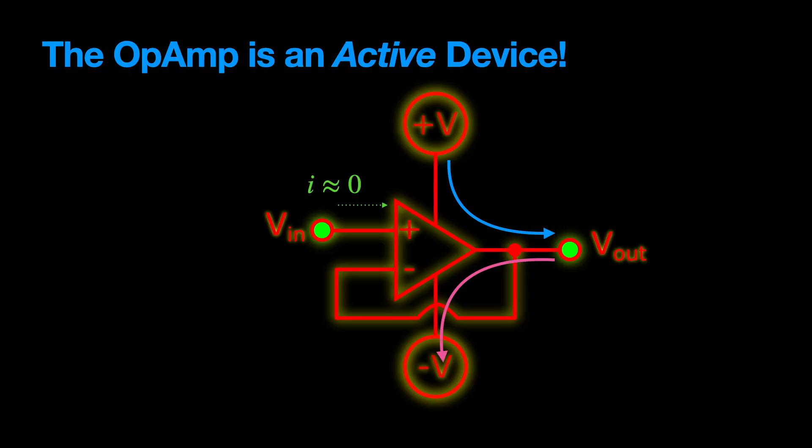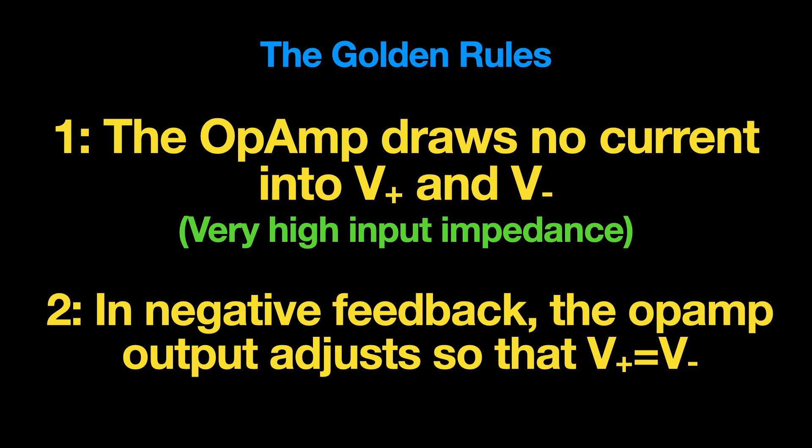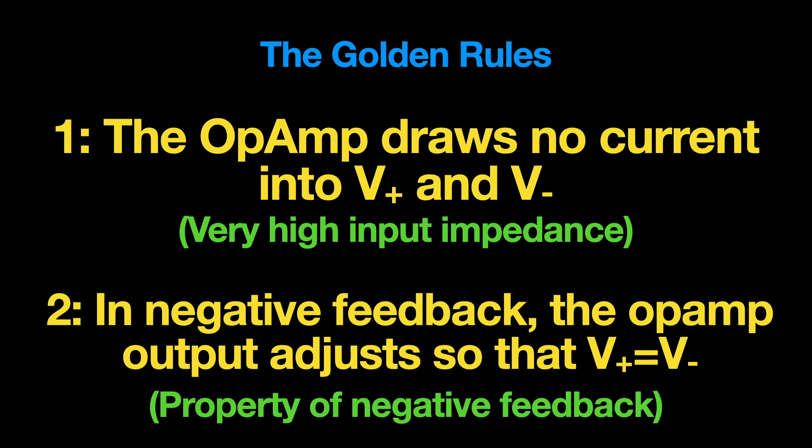Now we can summarize everything into two succinct design rules called the golden rules of op amps. Golden rule number one: the op amp draws no current into V plus and V minus. This is because the op amp has very high input impedance. Golden rule number two says in negative feedback, the output adjusts itself so that V plus is equal to V minus. Why? If not, it quickly corrects itself. This is a property of negative feedback. If V plus deviates from V minus, that really high gain pushes back super hard to correct for it such that V plus is about equal to V minus.